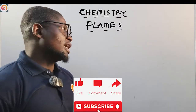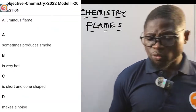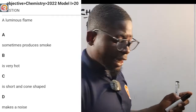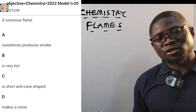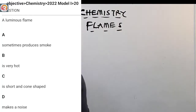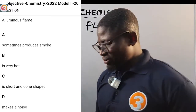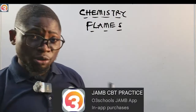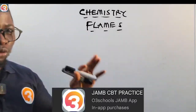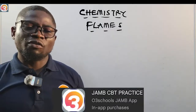Let us see a question on flame from the O3 school app. It's a 2022 question number 20: 'A luminous flame sometimes — A: produces smoke, B: is very hot, C: is short and cone-shaped, D: makes a noise.' We are going to come back to this question. What you are doing here is not a waste — it is exactly what you are supposed to do in the exam.